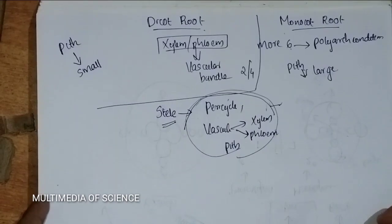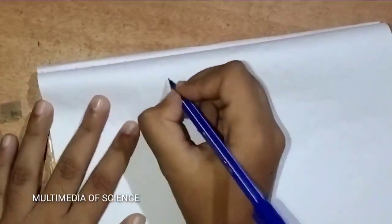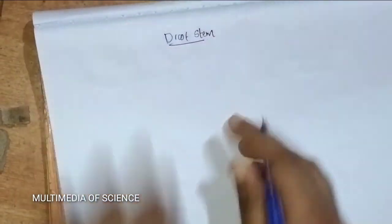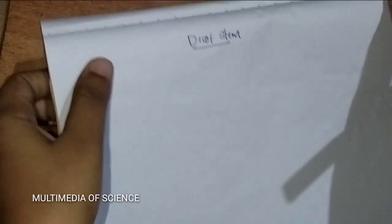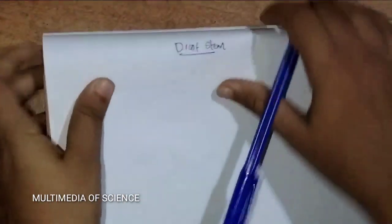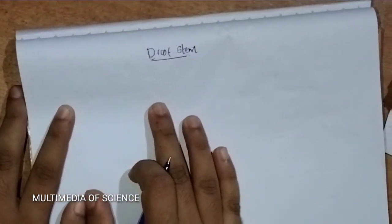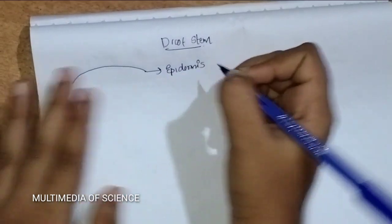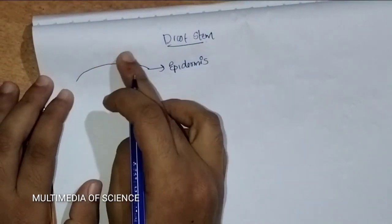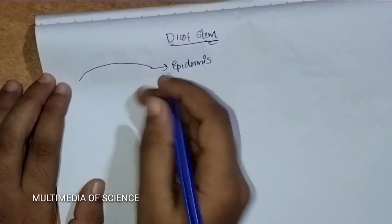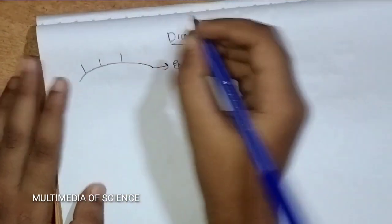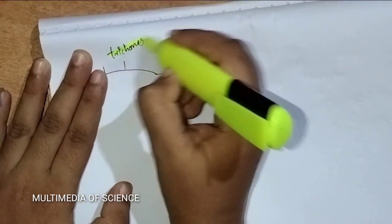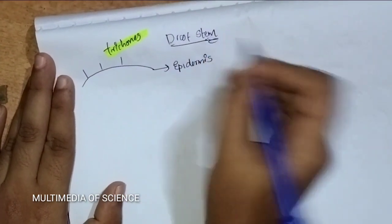Next we are dealing with Dicot stem. I believe that Dicot root and Monocot root are now clear. In Dicot stem, the outermost layer is named as epidermis. In Dicot root we saw unicellular hairs on the epidermis. In stem, trichomes are present. Then inner to the epidermis, cortex is present, then endodermis.